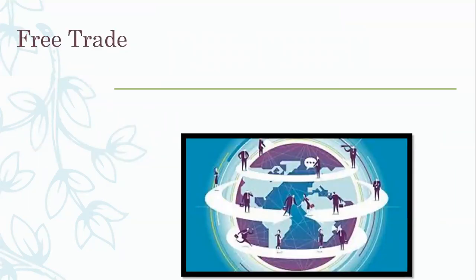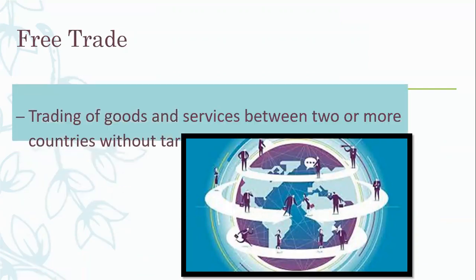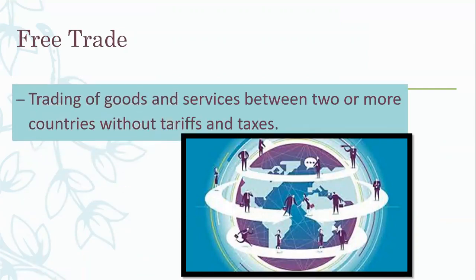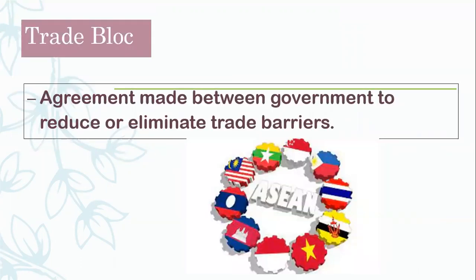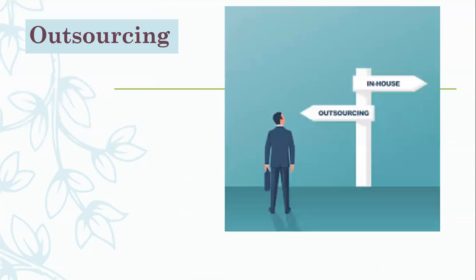Under trade liberalization, we have free trade. Free trade is the trading of goods and services between two or more countries without tariffs or taxes. We also have the trade block, which is an agreement made between governments to reduce or eliminate trade barriers.